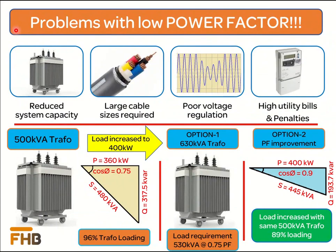The kVA requirement of the system is inversely proportional to the system power factor. Consider a 500 kVA transformer supplying power to a 360 kilowatt connected load at a power factor of 0.75. The kVA requirement is 480 kVA, meaning the transformer operates at 96% loading. If we increase the load to 400 kilowatts at the same power factor of 0.75, the kVA requirement increases to 530 kVA — exceeding the installed capacity of 500 kVA.